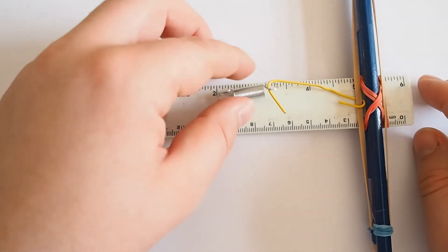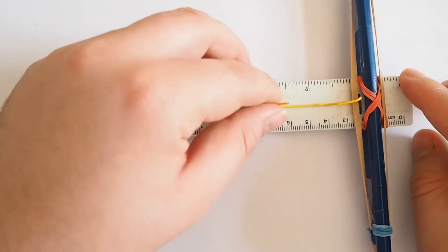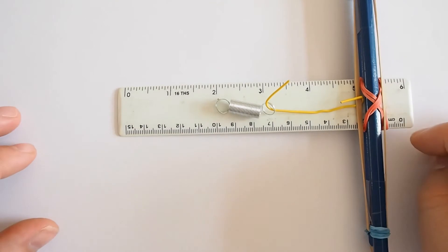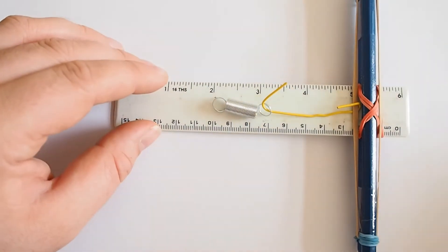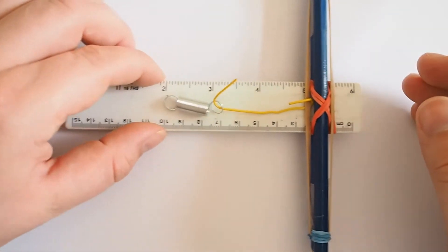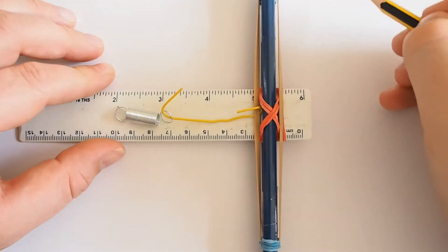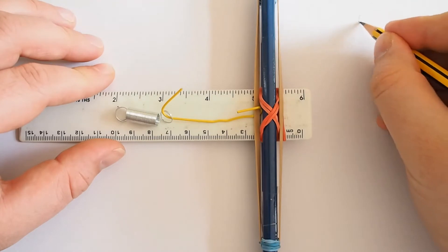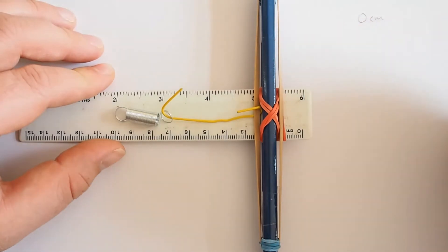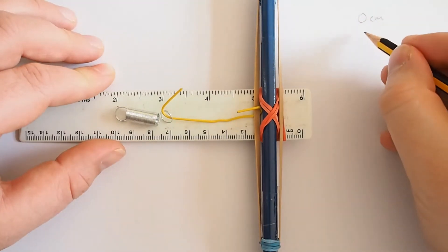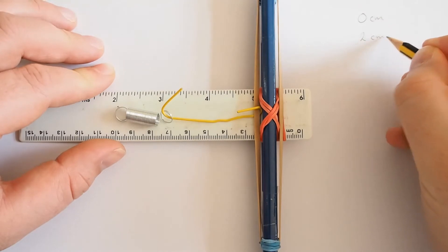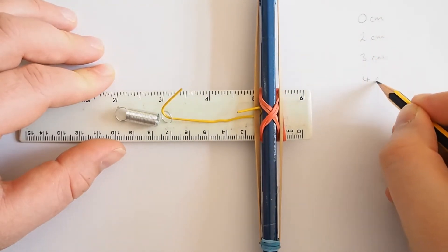But the first thing I'm going to do is make a note of all the different measurements I want to take. And I'm going to use this force meter. The different measurements I want to take: I'll take one at zero centimeters of extension, two centimeters, three centimeters, four centimeters.